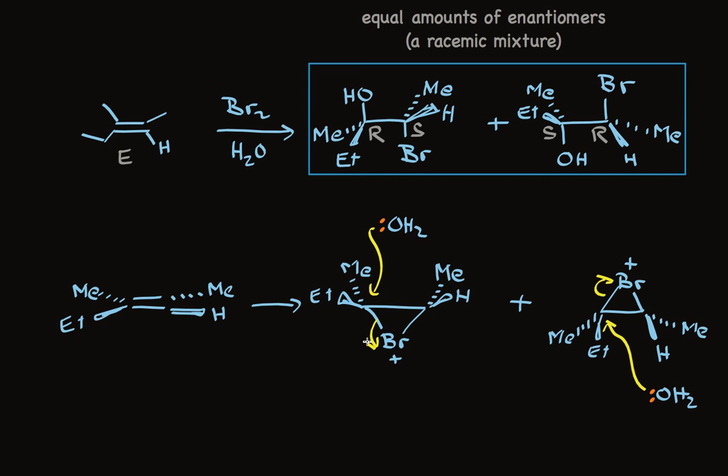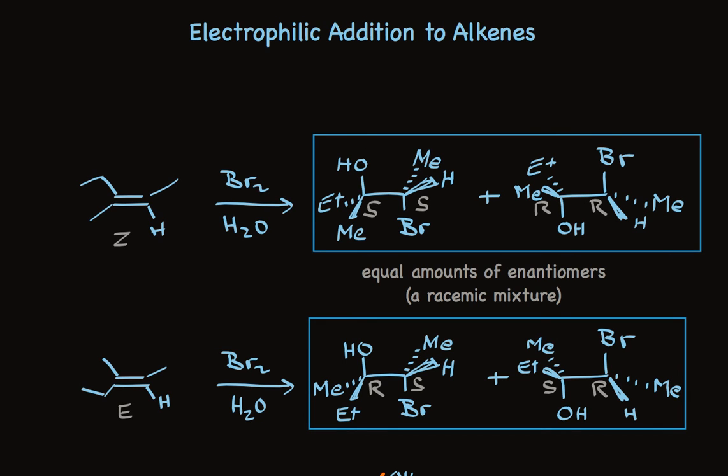The stereochemistry of the alkene and the anti-addition required by the reaction mechanism dictate the stereochemistry — only two enantiomers of four possible stereoisomers are formed. A reaction is called stereospecific when the stereochemistry of the products is dictated by the stereochemistry of the starting alkenes. The Z-alkene leads to one pair of enantiomers, and the E-alkene leads to a second pair of enantiomers.